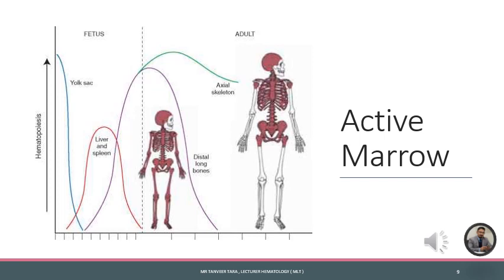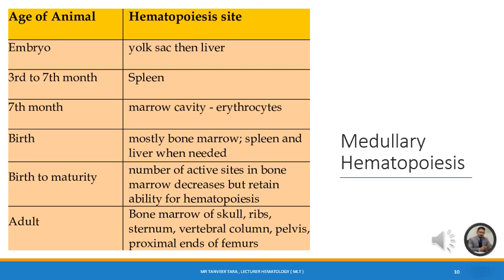We have two types of hematopoiesis: extramedullary hematopoiesis and intramedullary hematopoiesis. Extramedullary hematopoiesis is that which occurs in the liver and spleen, while intramedullary hematopoiesis is that which occurs in the active red marrow.